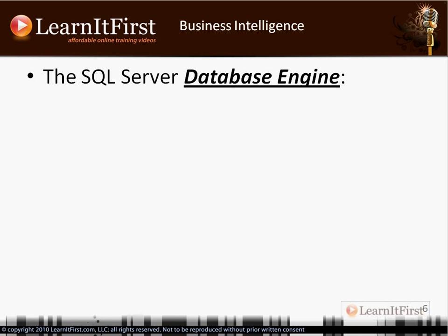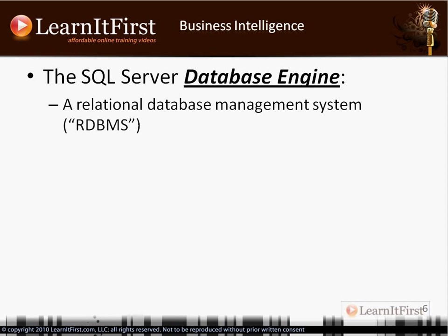The Database Engine's job is to be a relational database management system — an RDBMS. You should have a fair understanding of what 'relational' means. In a relational system, every transaction is logged and we're dealing with tables, columns, and rows. That's important because when we work with a data warehouse we might not be dealing with tables, columns, and rows. For now, when I say relational, think: a table with columns that has rows in it.